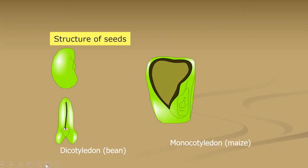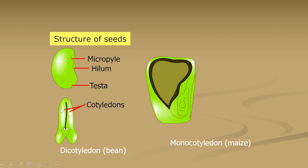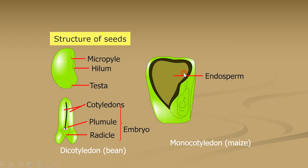Let's do a revision on the structure of seeds. This is the micropyle, hilum, testa, these are cotyledons, plumule, radicle, and cotyledons — the plumule and radicle make up the embryo. This is an example of a dicotyledon seed. And this is a monocotyledon seed, showing the endosperm, plumule, radicle, and cotyledon.